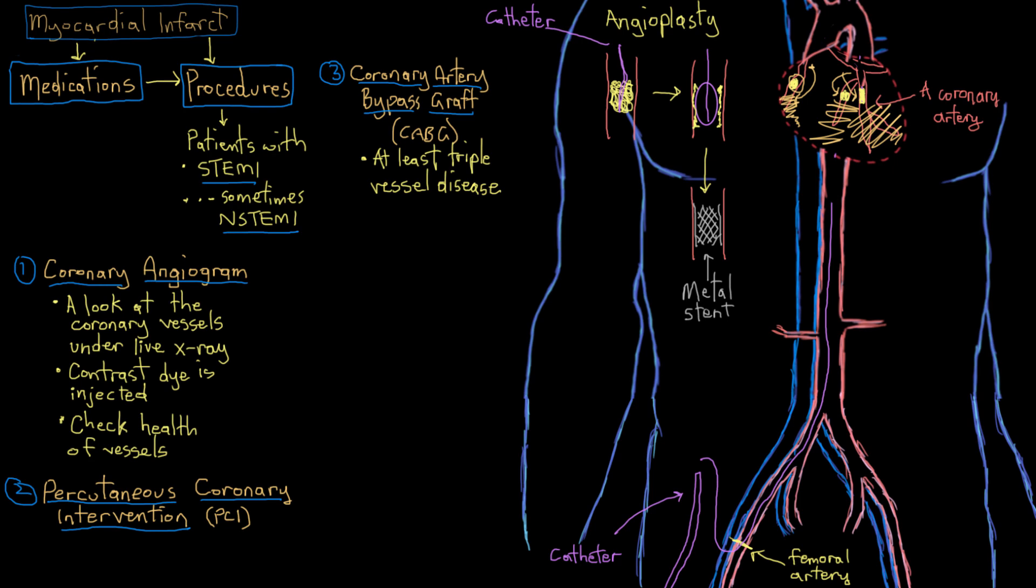So what happens? What happens in coronary artery bypass grafting? Well, just as the name suggests, bypassing, we take blood vessels from elsewhere in the body and use them to bypass the atherosclerotic plaque.